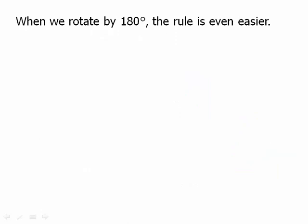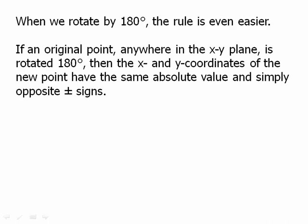When we rotate by 180 degrees the rule is even easier. If an original point anywhere in the xy plane is rotated 180 degrees then the x and y coordinates of the new point have the same absolute value and simply the opposite plus and minus signs.